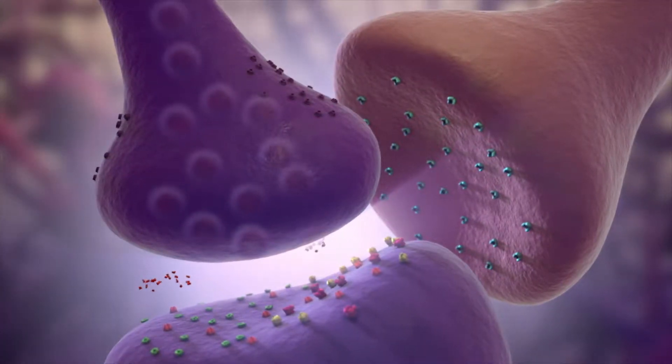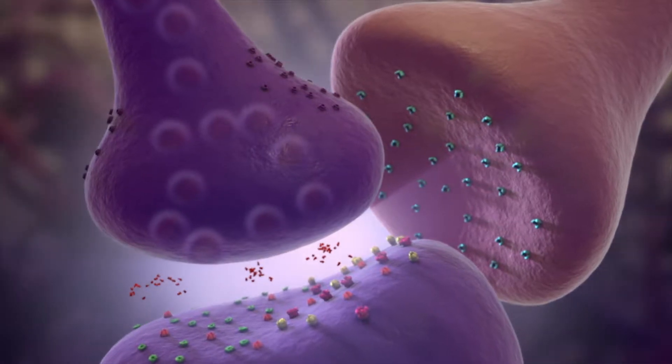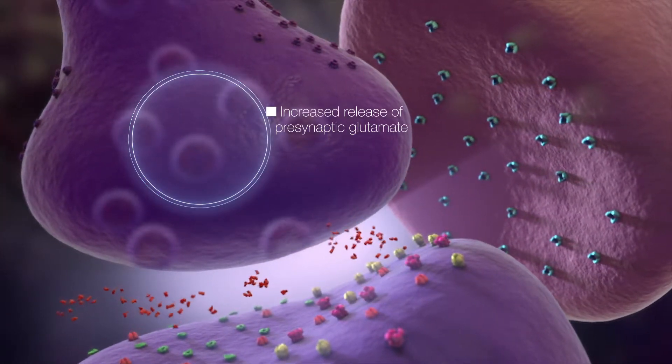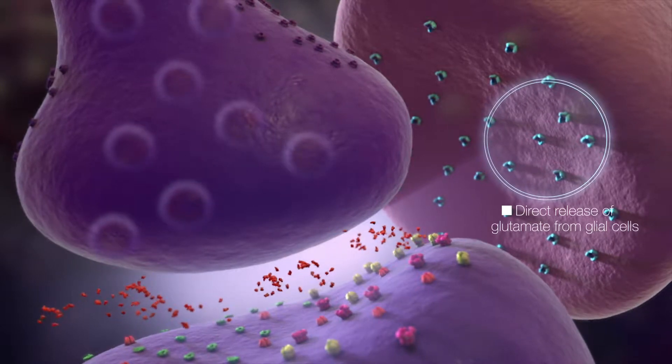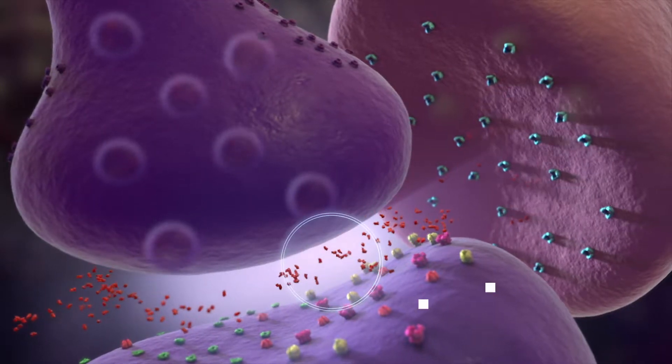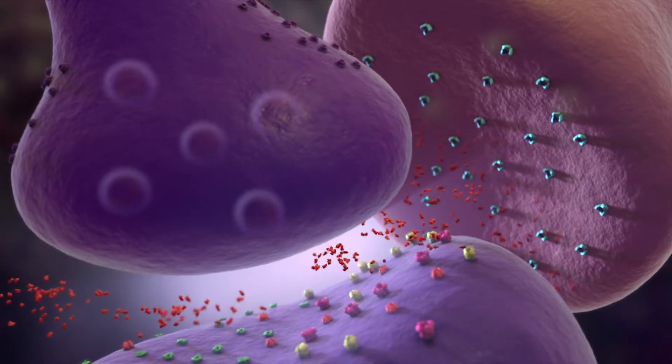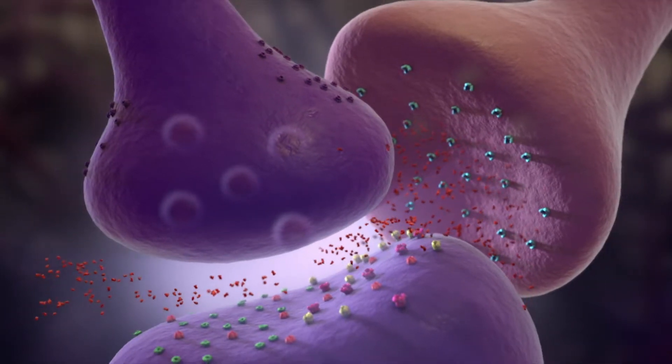Dysfunctional glutamate signaling can negatively alter brain function. Alterations such as increased release of presynaptic glutamate, the direct release of glutamate from glial cells, or an impaired ability to clear glutamate from the extracellular space can lead to excessive excitation of glutamate receptors.